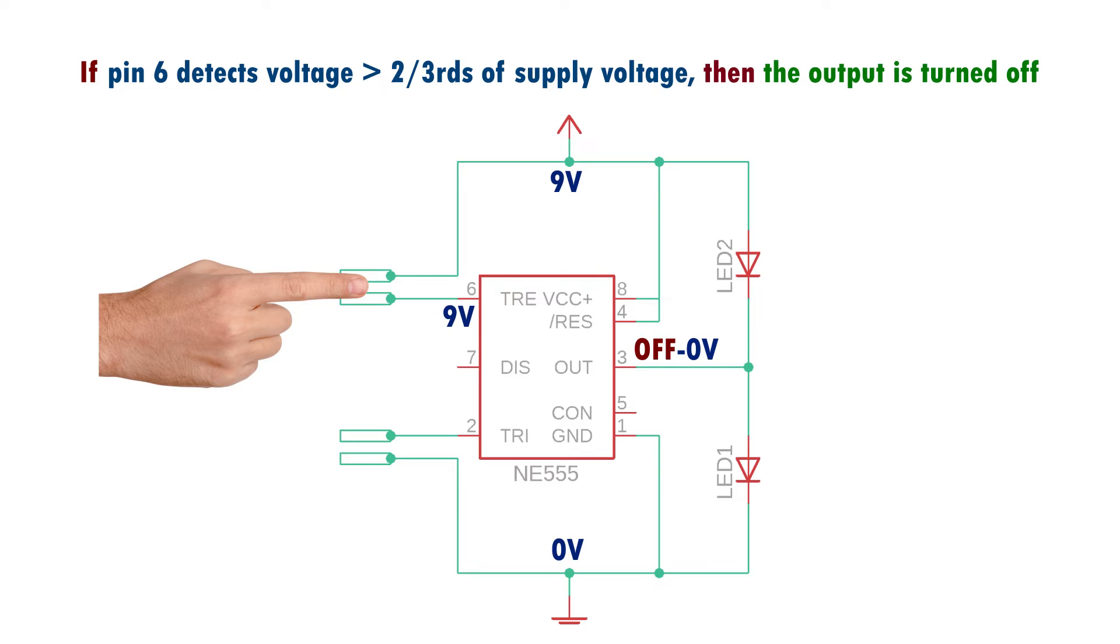Turning off means that the voltage at the output will be equal to 0 volts and so the LED turns on. For the other LED, at both its terminals, the voltage will be at 0 volts so it doesn't glow.